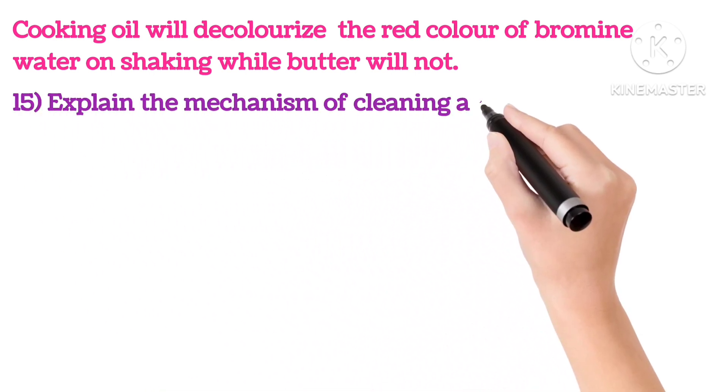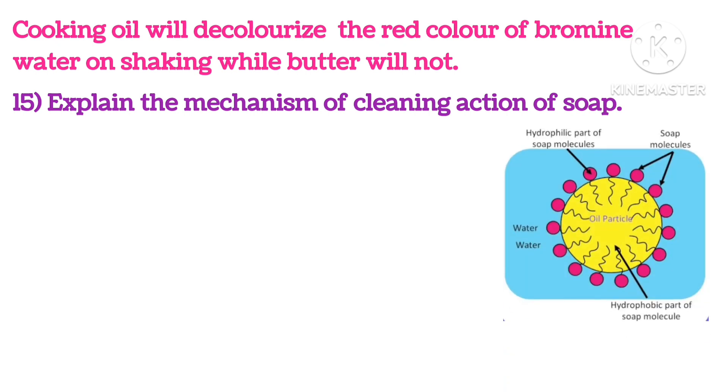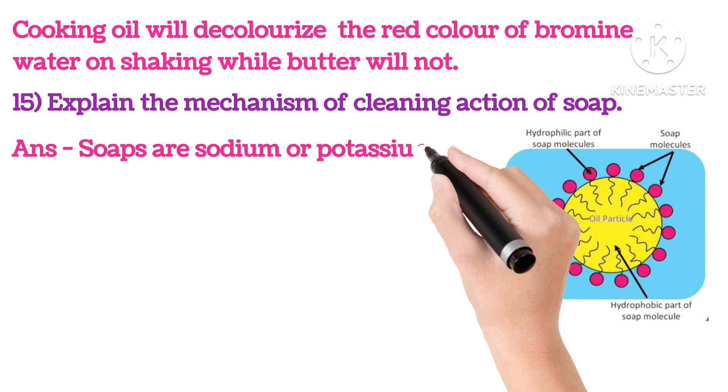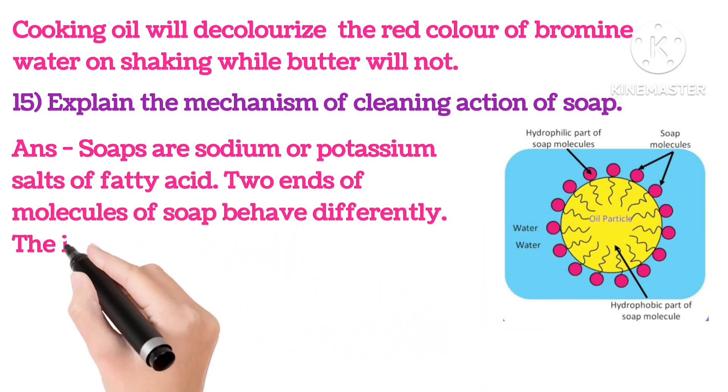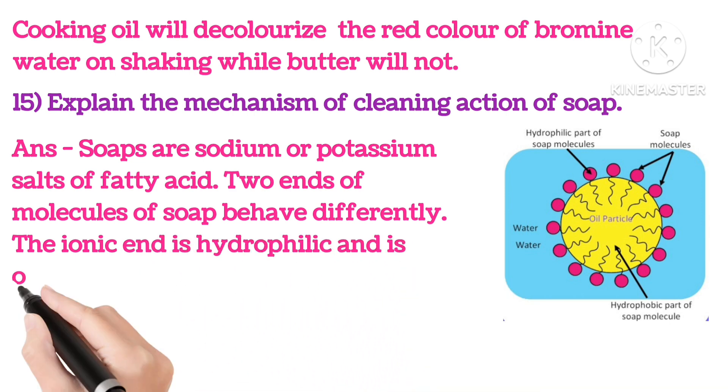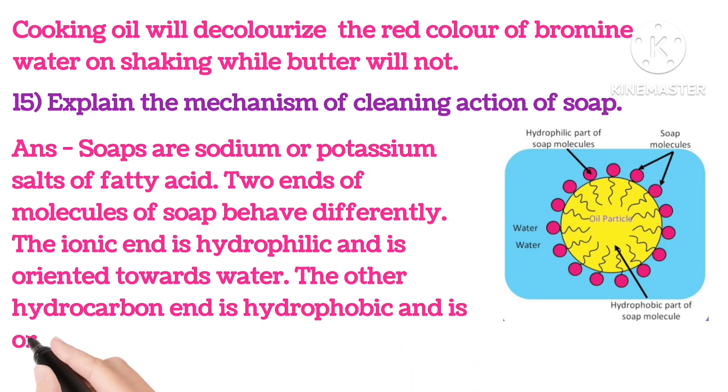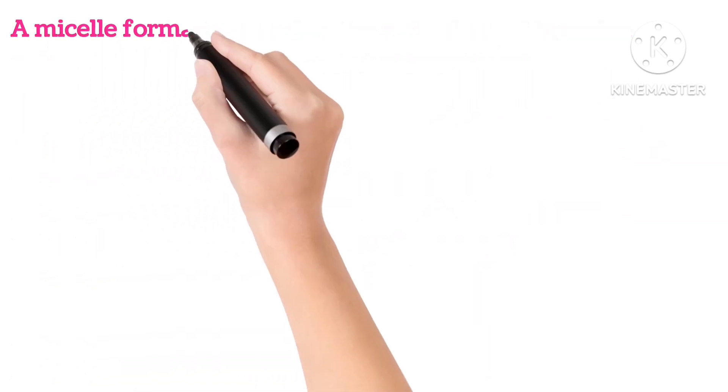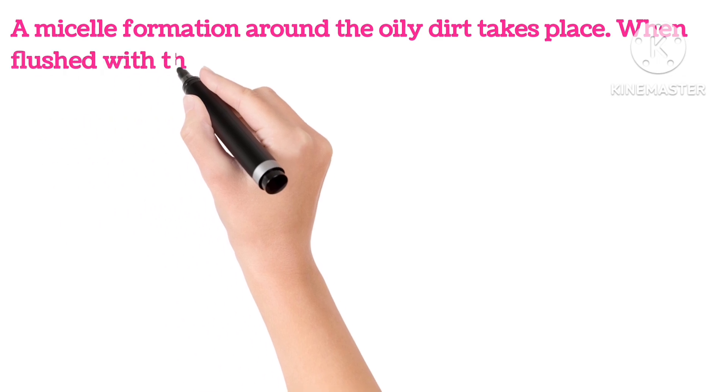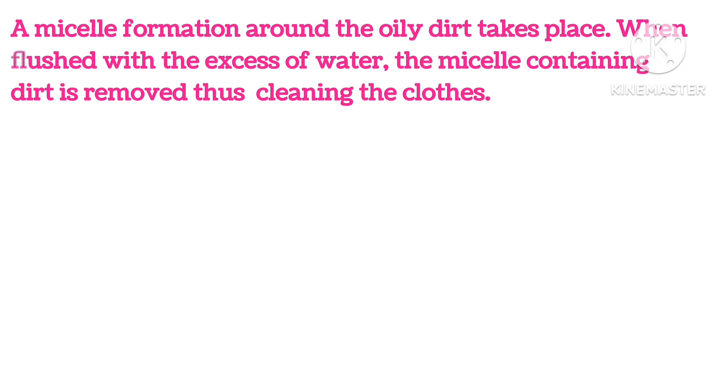Fifteenth, explain the mechanism of cleaning action of soap. As you can see in the picture, soaps are sodium or potassium salts of fatty acid. Two ends of the molecule of soap behave differently. The ionic end is hydrophilic and is oriented towards water. The other hydrocarbon end is hydrophobic and is oriented towards dirt which is oily in nature. A micelle formation around the oil dirt takes place when flushed with excess water. Micelle containing dirt is removed, thus cleaning the clothes.